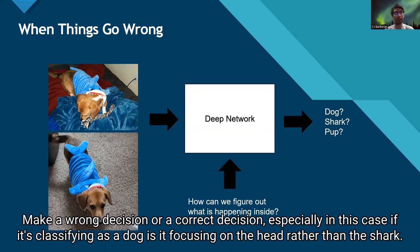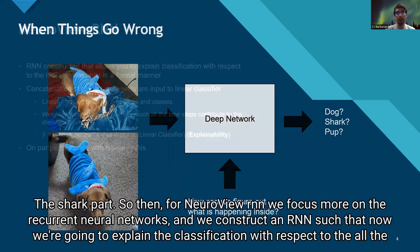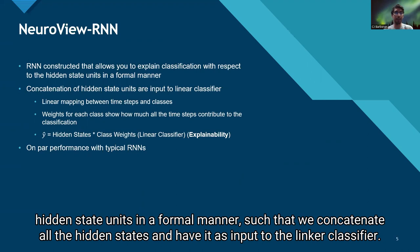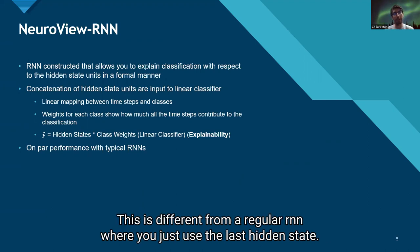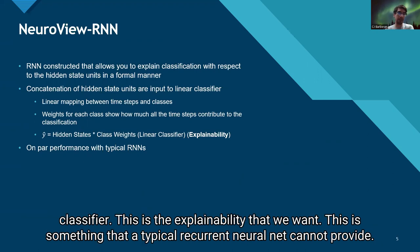Especially in this case, if it's classifying as a dog, is it focusing on the head rather than the shark part? For NeuroView RNN, we focus on recurrent neural networks and construct an RNN such that we explain the classification with respect to all the hidden state units in a formal manner — we concatenate all the hidden states and use them as input to a linear classifier. The prediction Y equals the concatenation of all hidden states times the class weights from the linear classifier. This is the explainability we want.